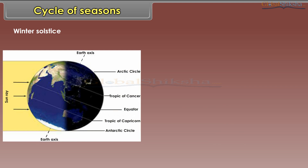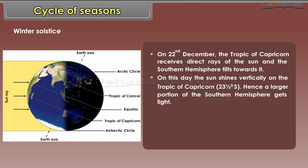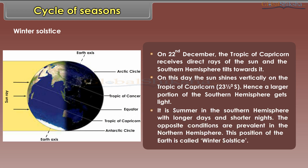On 22nd December, the Tropic of Capricorn receives direct rays of the sun and the southern hemisphere tilts towards it. On this day, the sun shines vertically on the Tropic of Capricorn, 23 and a half degrees south. Hence, a larger portion of the southern hemisphere gets light. It is summer in the southern hemisphere with longer days and shorter nights. The opposite conditions are prevalent in the northern hemisphere. This position of the earth is called winter solstice.